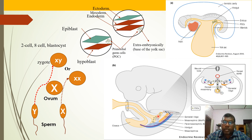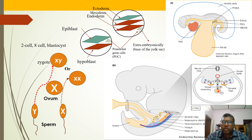Here the question comes: if the primordial germ cells fail to migrate to the gonadal ridge, will this organ still form a testis or ovary? It has been found that if, due to some reason, the primordial germ cells fail to migrate to the genital ridge, the organ will still form a gonad but without the primordial germ cells — that is, without spermatozoa or germ cells.